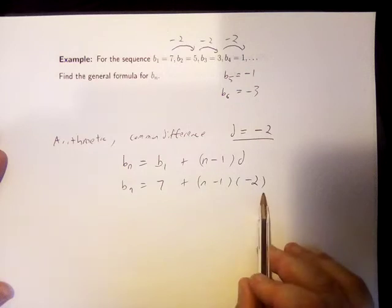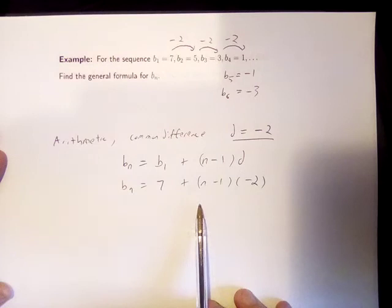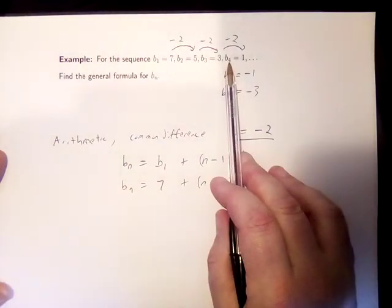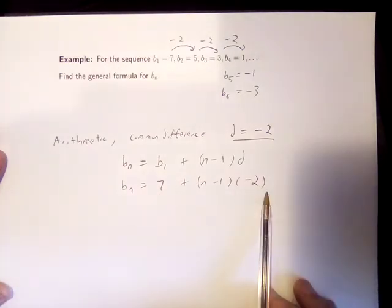And of course, we can check whether it gives us all the terms in the sequence. For example, if I put in 4 for n into my formula, does it give me positive 1? And the answer is yes.